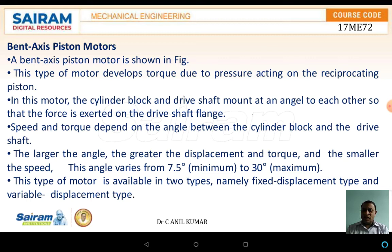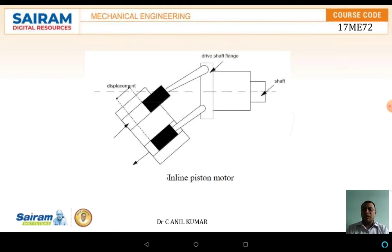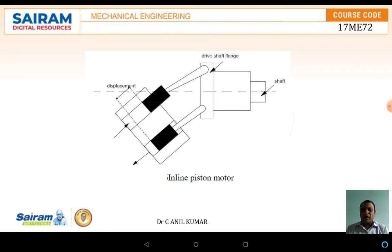This type of motor is available in two types: fixed displacement or variable displacement. The schematic diagram shows the variable displacement bent axis piston motor. The left side consists of the cylinder, which is connected to a piston. The piston is in turn connected to a driving shaft. As pressure is applied on the piston, the cylinder starts rotating and the piston moves in and out in forward and reverse stroke directions. Because of the piston movement, the piston is connected to the shaft through a link or rod, which causes the shaft to rotate.